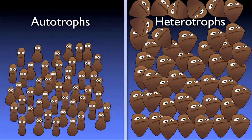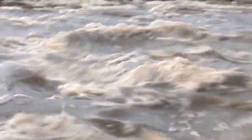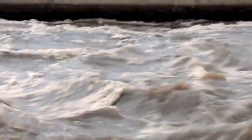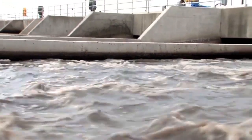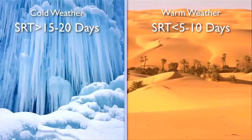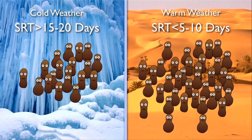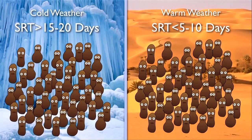The nitrifiers dictate the SRT in nitrogen-reducing plants. How fast nitrifiers grow depends on the temperature of the wastewater and the amount of dissolved oxygen present. If nitrifiers aren't allowed enough time to thrive, you run the risk of accidentally wasting them out of the system entirely and losing nitrification. Higher temperatures and DO concentrations mean faster growth; colder temperatures and lower DO concentrations mean slower growth.